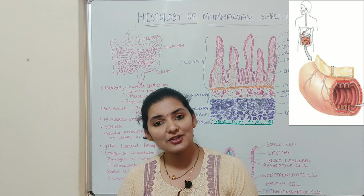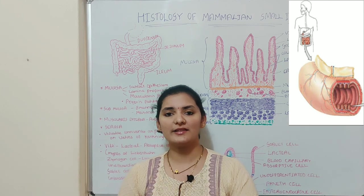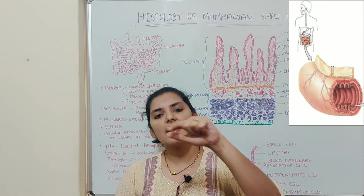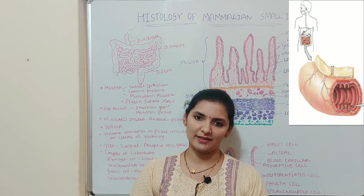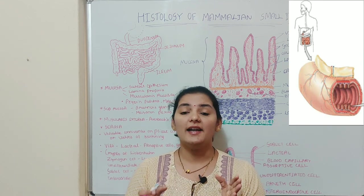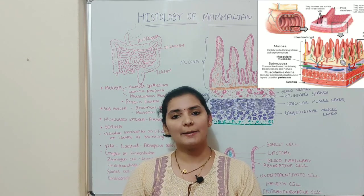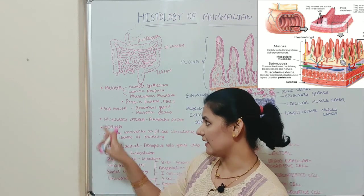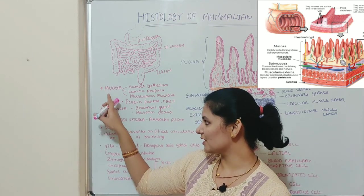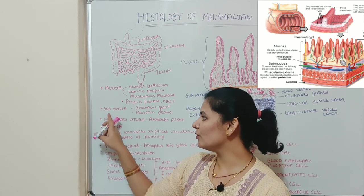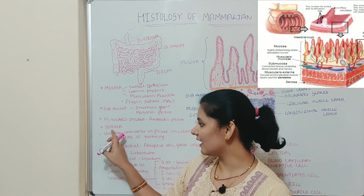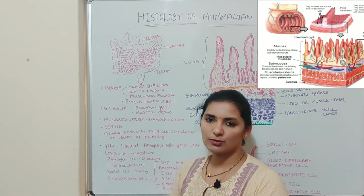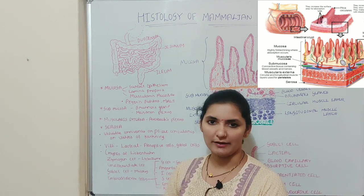If you take a section of the small intestine, it has a large central lumen surrounded by a wall. This wall of the small intestine is made up of four layers or four coats: mucosa, submucosa, muscularis externa, and serosa. We will discuss each of these four layers one by one.